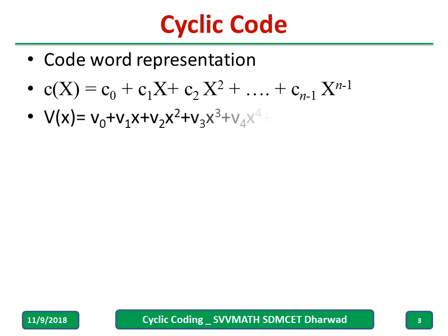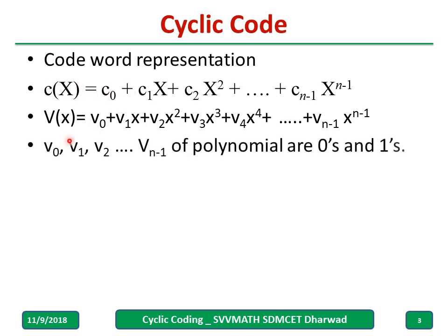To understand this we can use some example. Before that, remember in some books they use V(x), in some books they use V(x). These V₀, V₁, V₂, Vₙ₋₁ of a polynomial are 0s and 1s and one should know the binary addition, binary multiplication for this chapter.